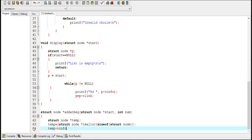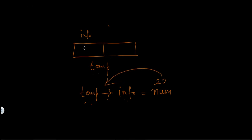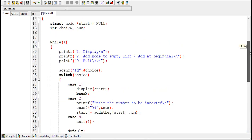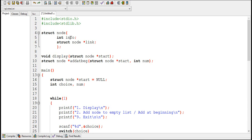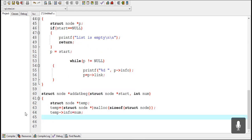The arrow operator — a combination of a hyphen and greater-than symbol — is used to access members of a structure through a pointer. So 'temp->info' means the info part of the new node. If the user enters 20 as the number to store, then 20 is stored in the info part of that node. The arrow operator can access any part of the node, whether the info part or the link part.